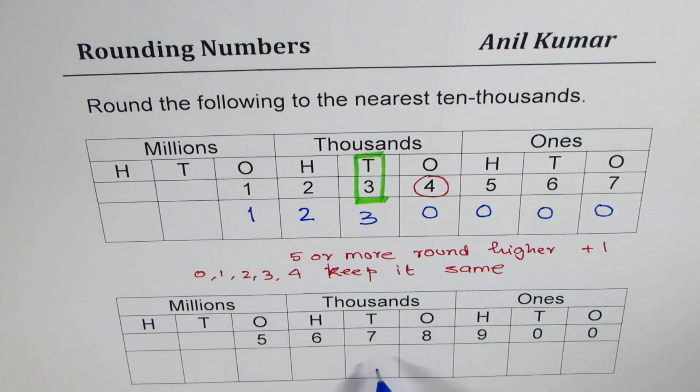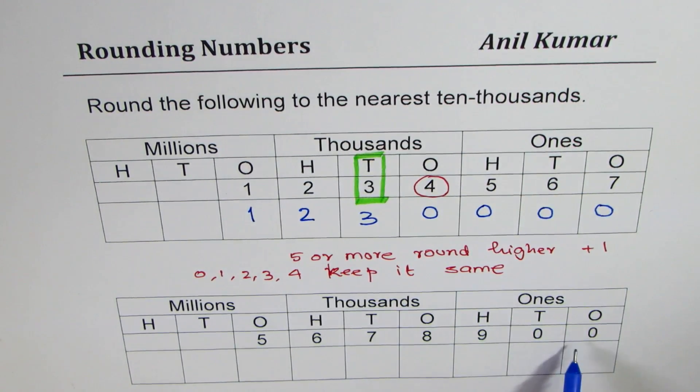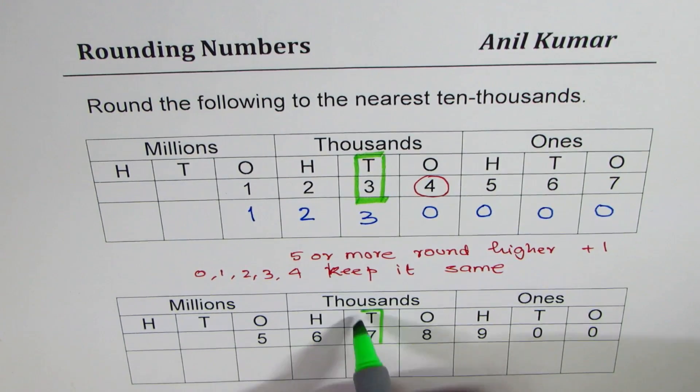One more practice question. And then we will move on to variety of questions on this topic. So here we have a number which is 5,678,900. You have to round this to nearest ten thousands. So we are looking at the number which is at ten thousands place.